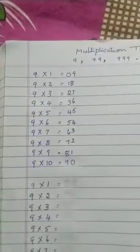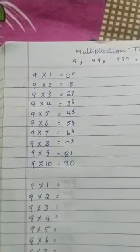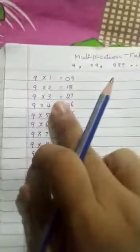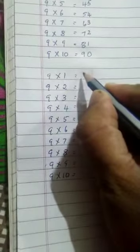Hello students, today I am going to show you the trick hidden behind in some of the multiplication tables. Yes, the table of 9 is the most magical table. Now, let me show you how to write the table of 9 without multiplying.